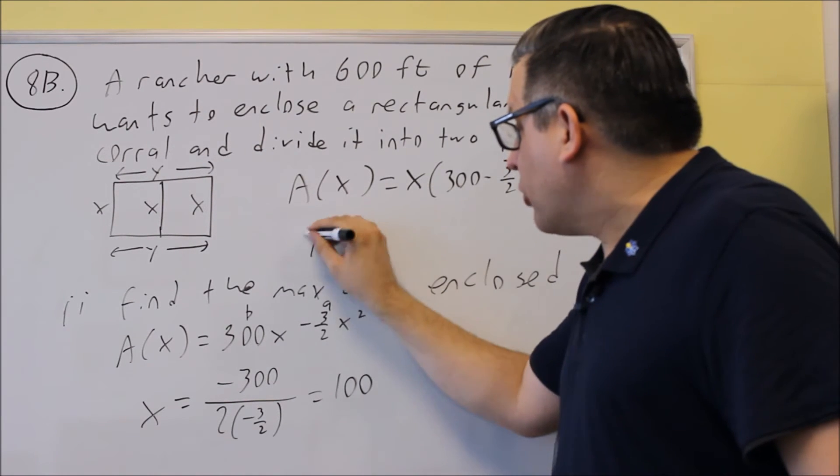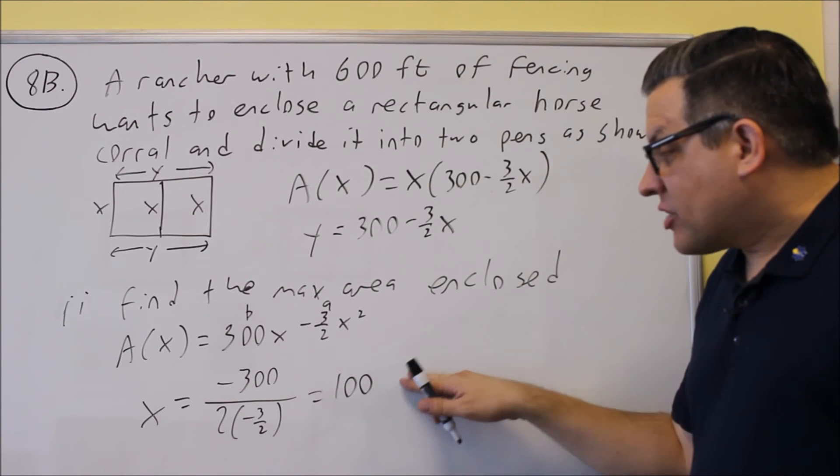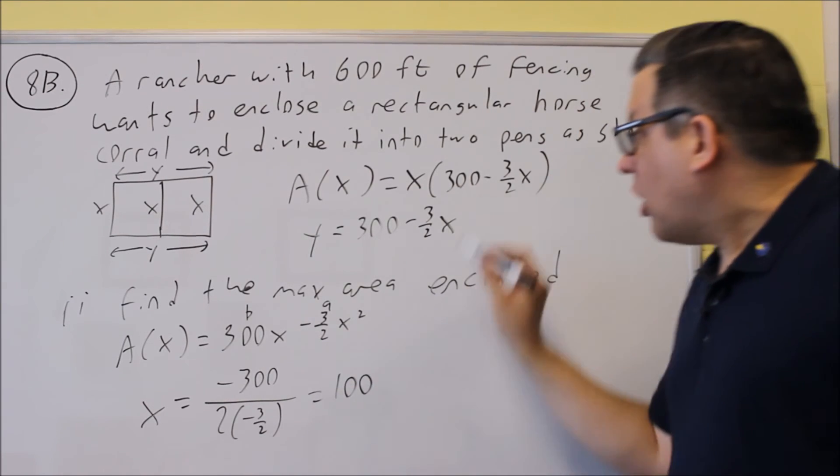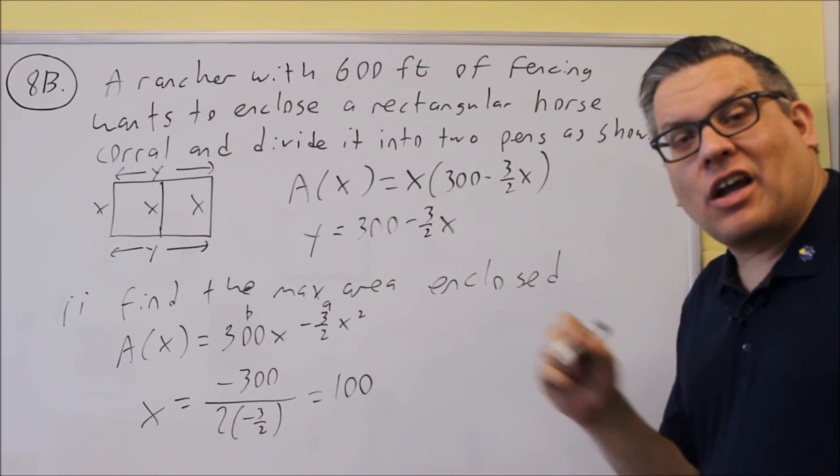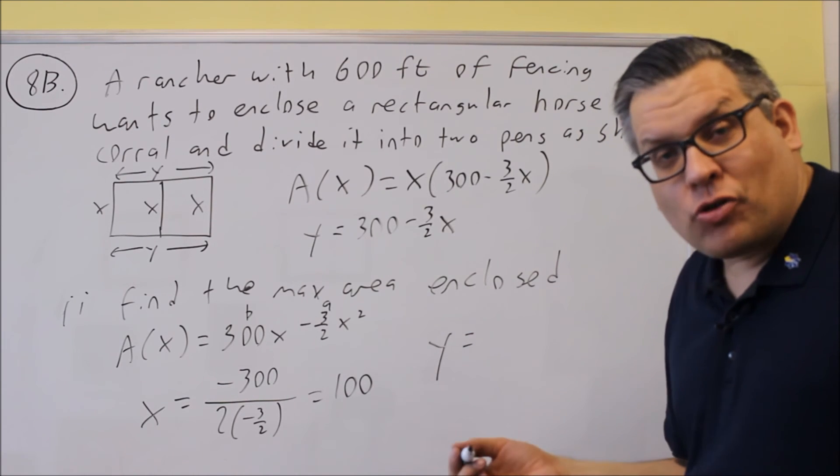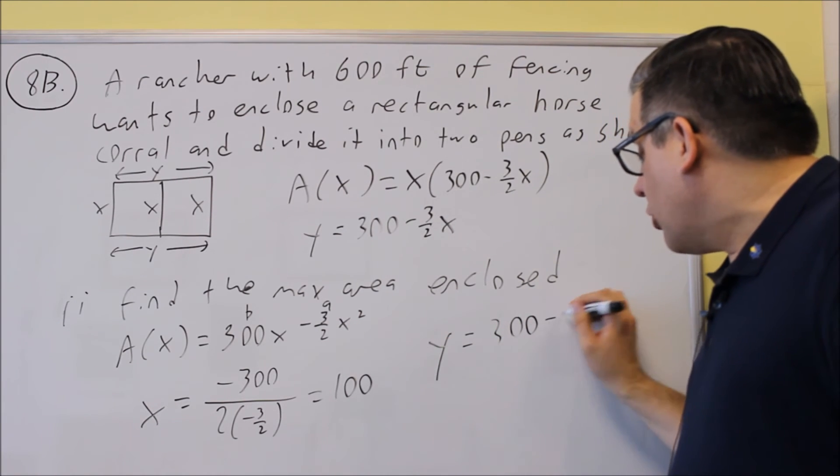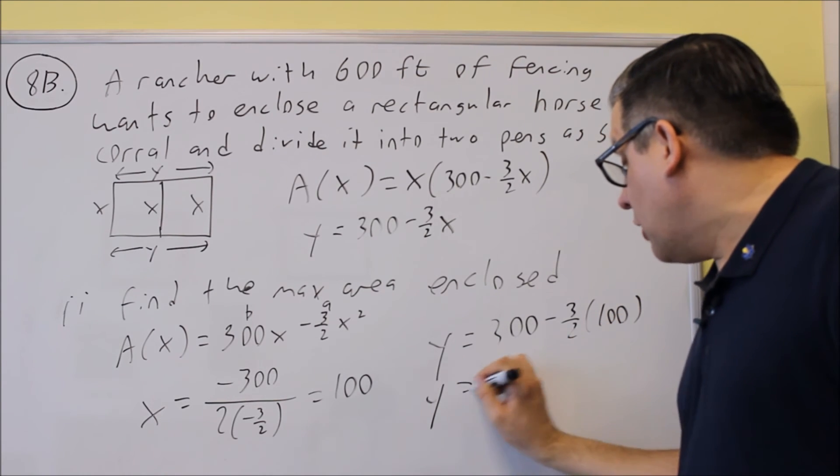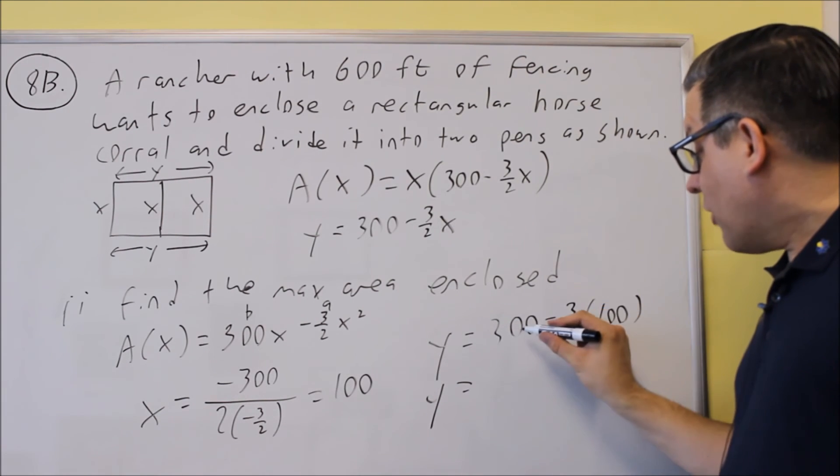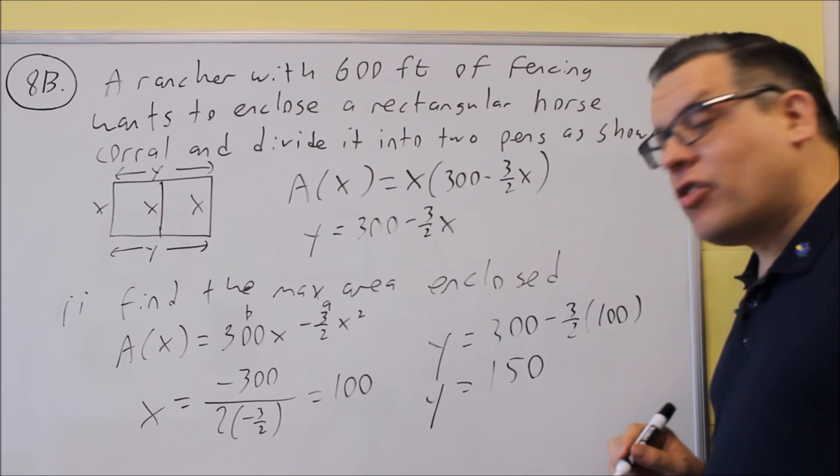Now earlier, we had in the previous part, we said that y was equal to 300 minus 3 halves x. So I'm going to do that next. I want to figure out what the y value is. So just in case they ask you for dimensions, you would do this step anyway to get the x and the y. I'm going to do 300 minus 3 halves times 100. 2 goes into 100, you get 50. So you have 300 minus 3 times 50, or 300 minus 150. So you're going to get 150 as a result.